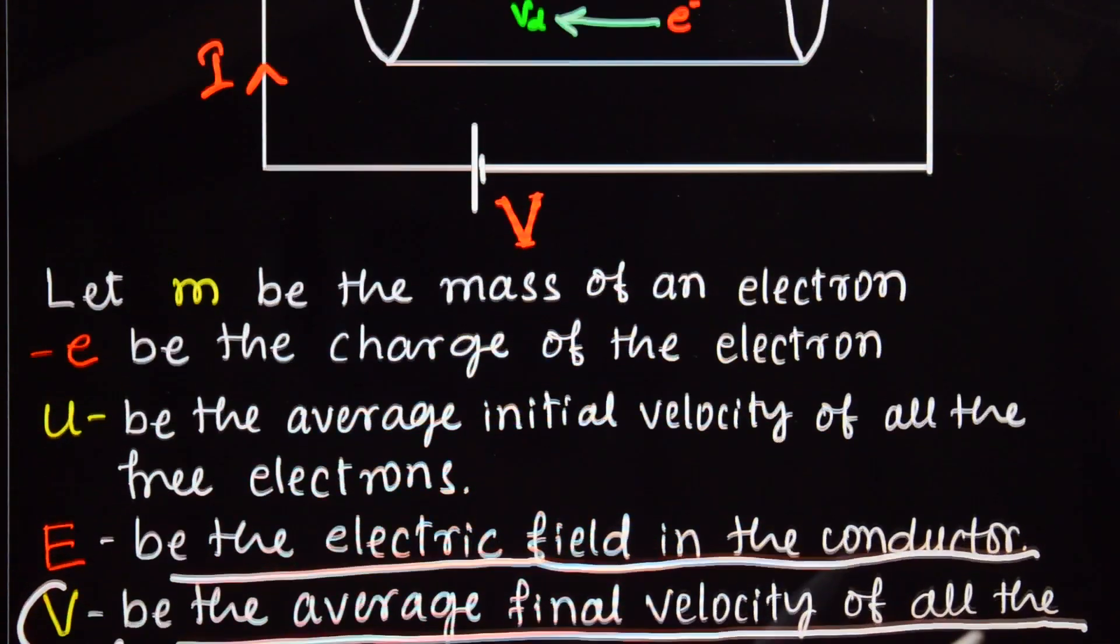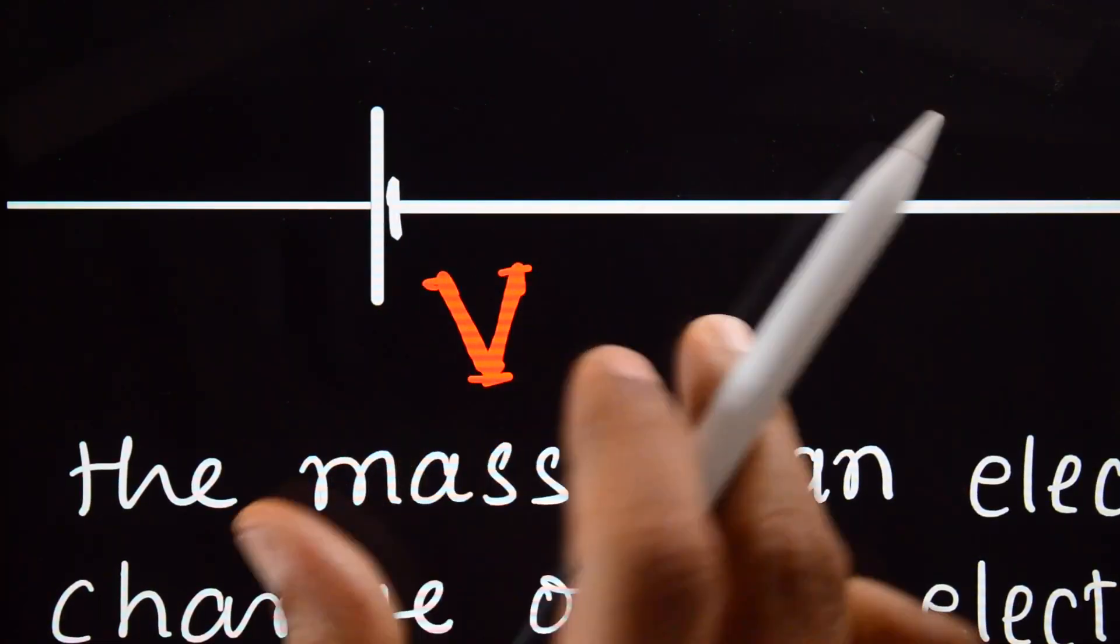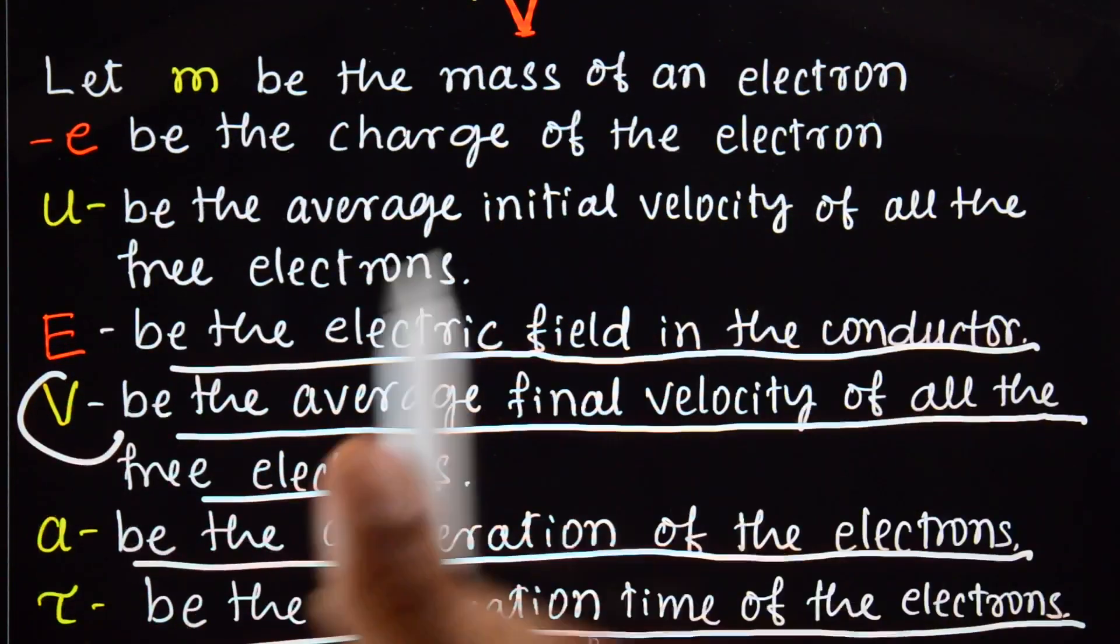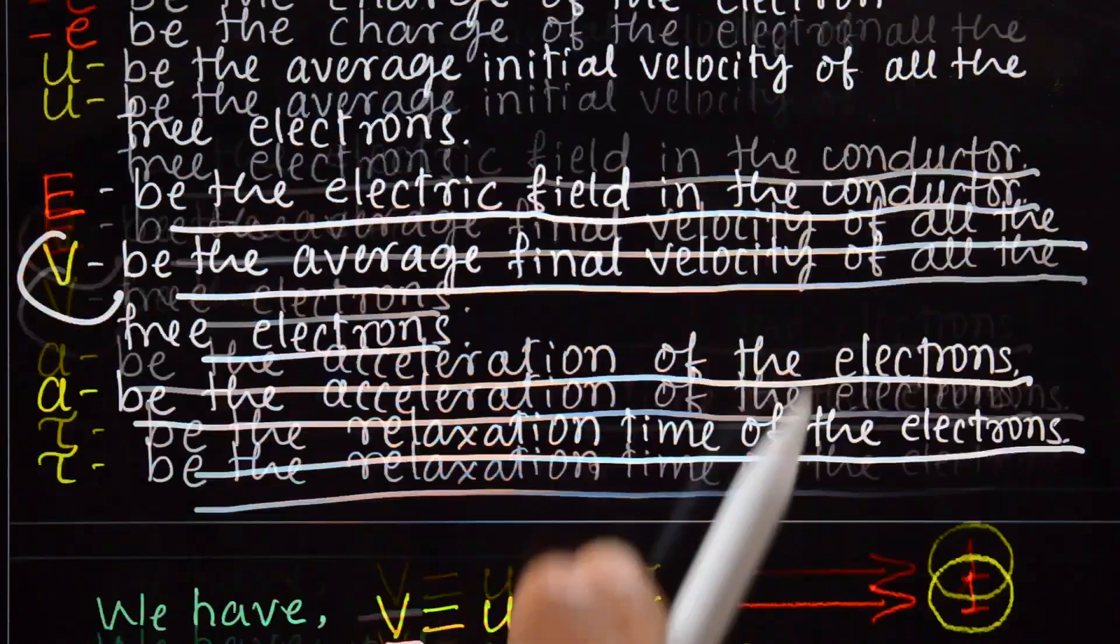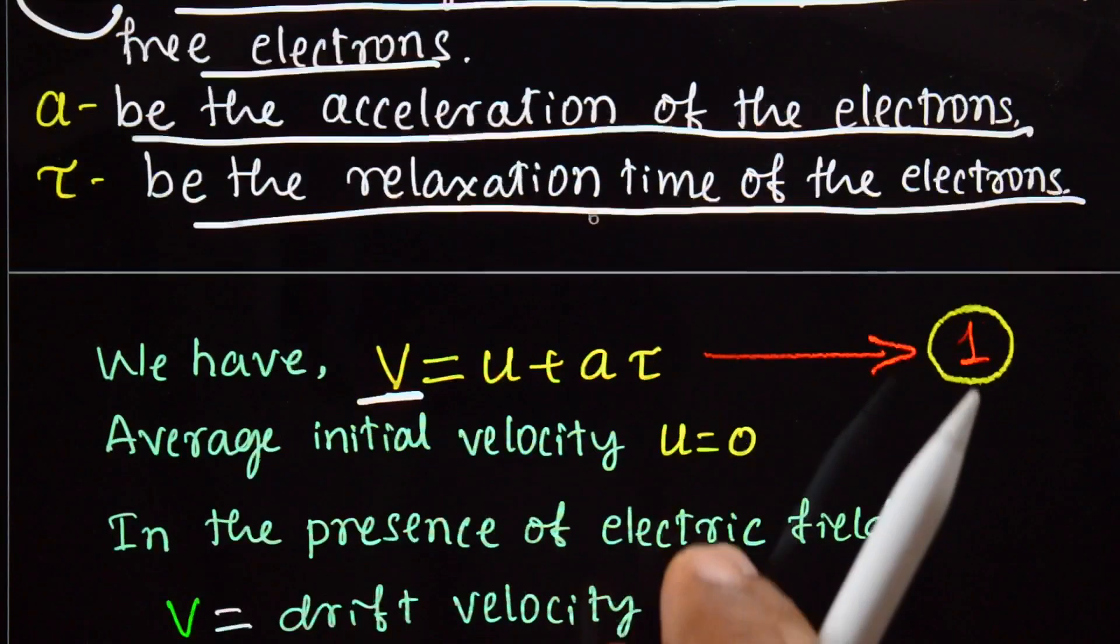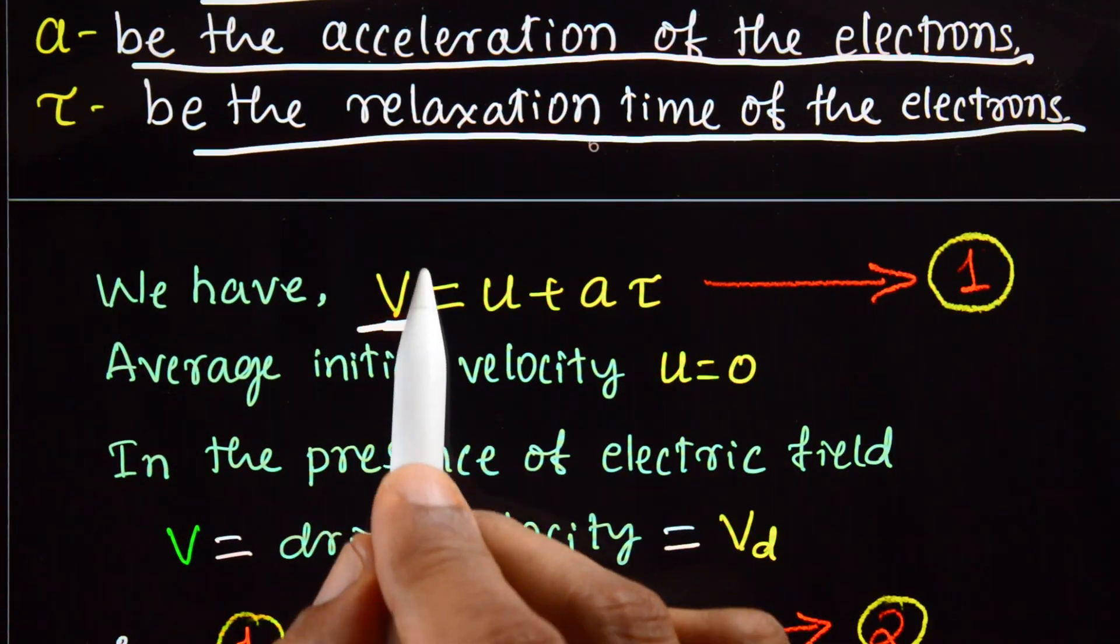Let tau be the relaxation time of electrons. And don't confuse - this V is applied potential difference. Don't get confused between the two V's. This is applied potential difference, and this is velocity of the electron.